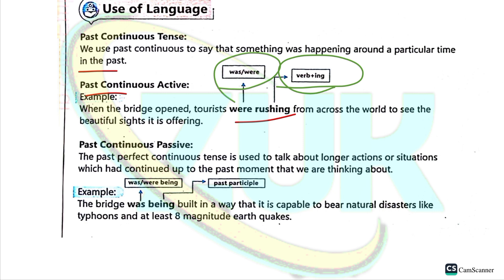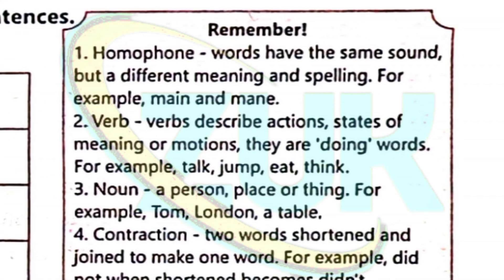The perfect continuous tense is used to talk about a longer action or situation which had continued up to the past moment that we are thinking about. For example: 'The bridge was being built.' Here 'was' is used with 'being' and the past participle. Note the difference between past continuous active and past continuous passive.